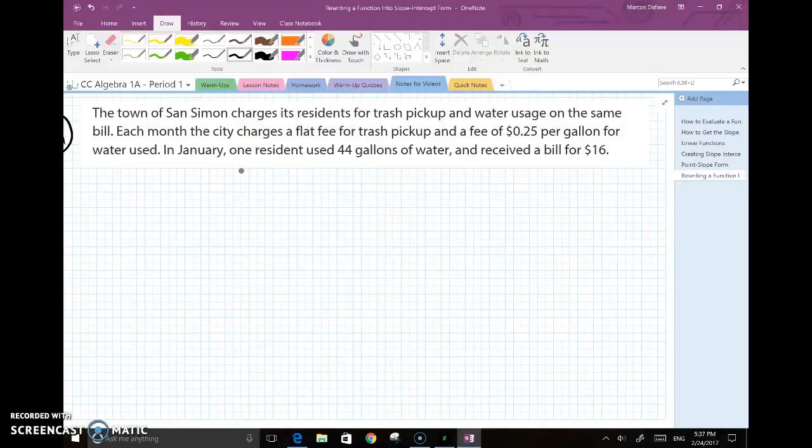And this word question I really like because what it does is it allows us to make a sort of connection between scenario and what would otherwise be just a cut and dry function. So let's go ahead and read through this. The town of San Simeon charges its residents for trash pickup and water usage on the same bill. Each month, the city charges a flat fee for trash pickup and a fee of 25 cents per gallon for water used. In January, one resident used 44 gallons of water and received a bill for $16. Now, it may seem like there's a lot of information here, but the truth is, out of all this scenario, we only need a small percentage of what's given to us and the rest just creates a story. And once you read it, you don't need it. So what I'm talking about, the parts that we do need, I'll highlight for you.